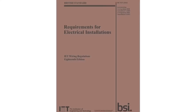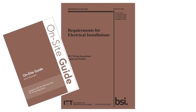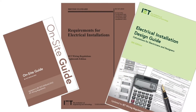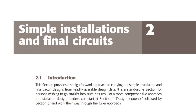There are a number of documents we'll be referring to through these videos: BS 7671 obviously, the On-site Guide which also contains useful information, and then there's the often overlooked and incredibly valuable Electrical Installation Design Guide published by the IET. This book explains what our first step should be for simple installations and final circuits in Chapter 2.